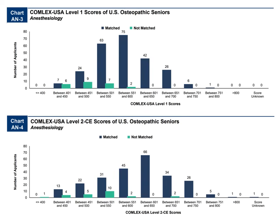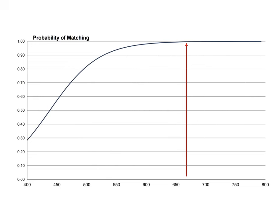Try to break 600 on both Comlex exams. If you score between 501 and 550, 63 DOs still ended up matching into anesthesiology, but you really need to break a 500. If you don't get at least 500 on Level 1, you'll have a lot of problems — illustrated by the precipitous drop-off below 500. For Level 2, still aim to break 600, but you can still match between 551 and 600, or even 501 to 550. Your probability of matching as a DO based on Comlex Level 1: scoring around 670 gives you a 100% chance of matching. If anesthesiology is your only option, make your goal 670.